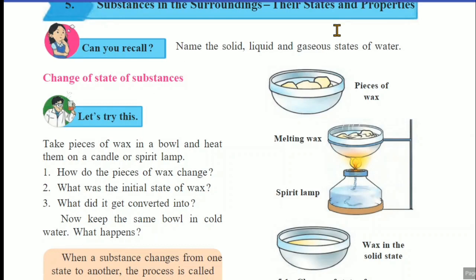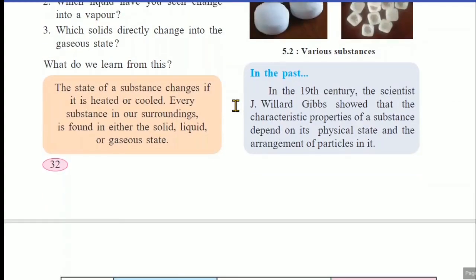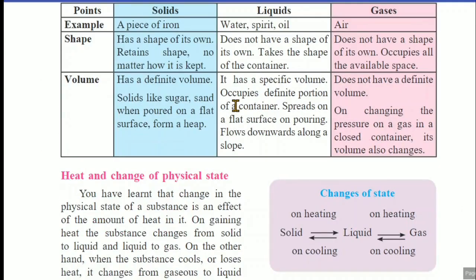We started this lesson in the last lecture. In that video, we discussed about the change of state of substances. We know that three states are there: solid, liquid, or gas. From solid to liquid, from liquid to gas or vapour, how substances get changed, which changes take place — the concept of heat and change into the physical state.